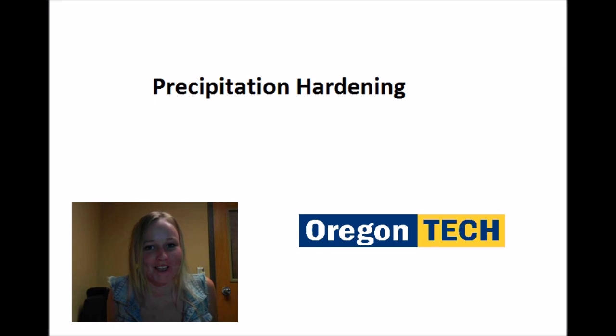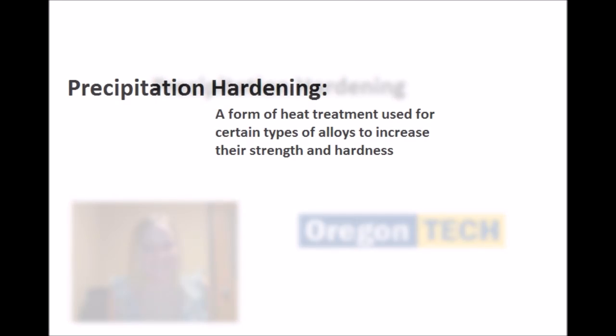Precipitation hardening brought to you by Oregon Tech. Precipitation hardening, often referred to as age hardening, is a form of heat treatment used to increase the hardness and yield strength of certain types of metal alloys.